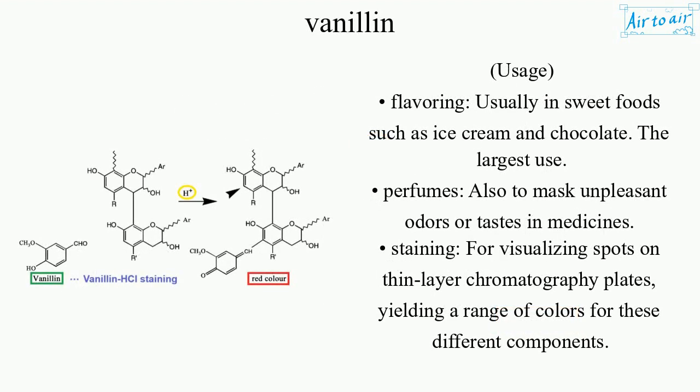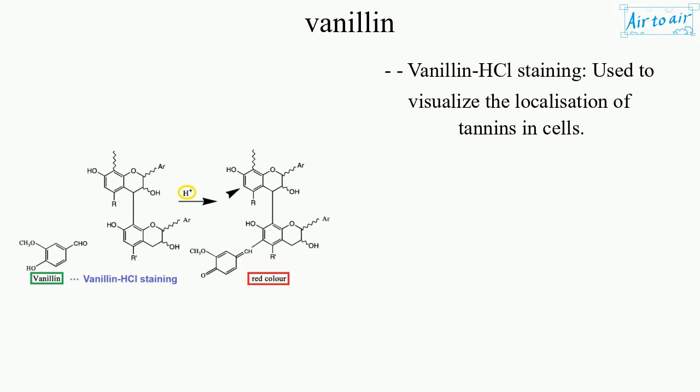Usage: Flavoring — usually in sweet foods such as ice cream and chocolate — is the largest use. Vanillin is also used in perfumes and to mask unpleasant odors or tastes in medicines. It is used for staining to visualize spots on thin layer chromatography plates, yielding a range of colors for different components. Vanillin-HCl staining is used to visualize the localization of tannins in cells.